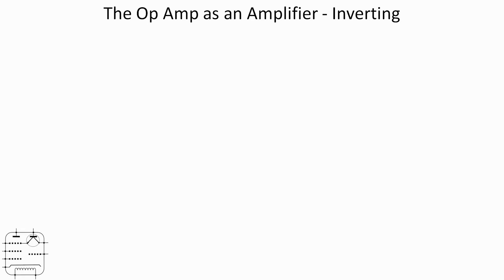Okay, second application for the op amp then is the inverting amplifier. The circuit is similar. We've still got that resistor in a feedback path, but this time the input is going into the negative input of the op amp.